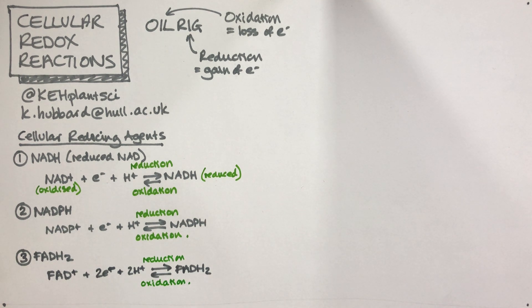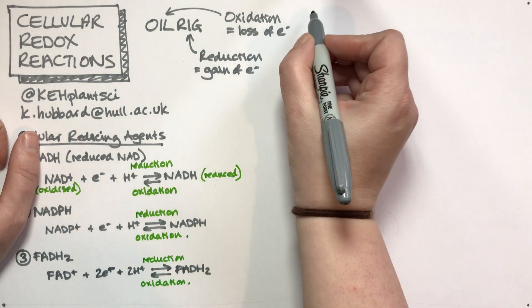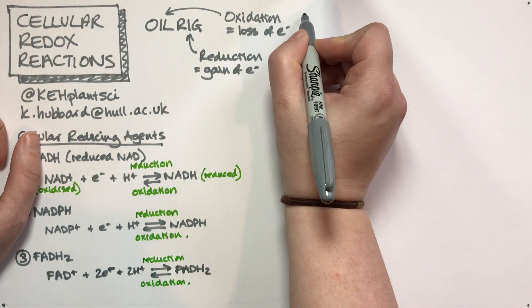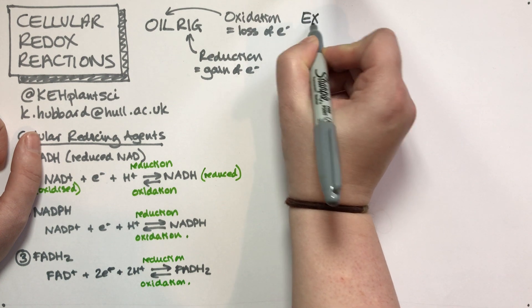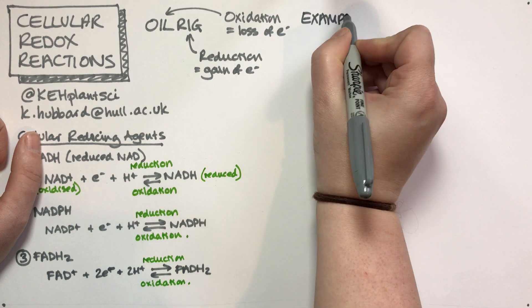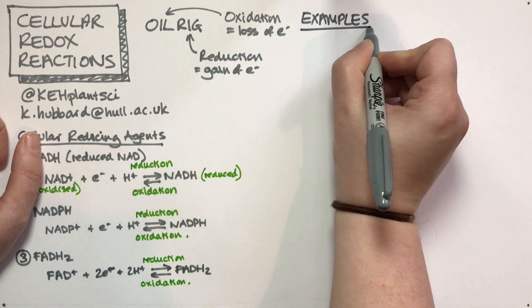Those are our cellular reducing agents. If you look at textbook chapters about respiration or anything to do with metabolism, you'll see these molecules NADH, NADPH, and FADH2 coming up all over the place.